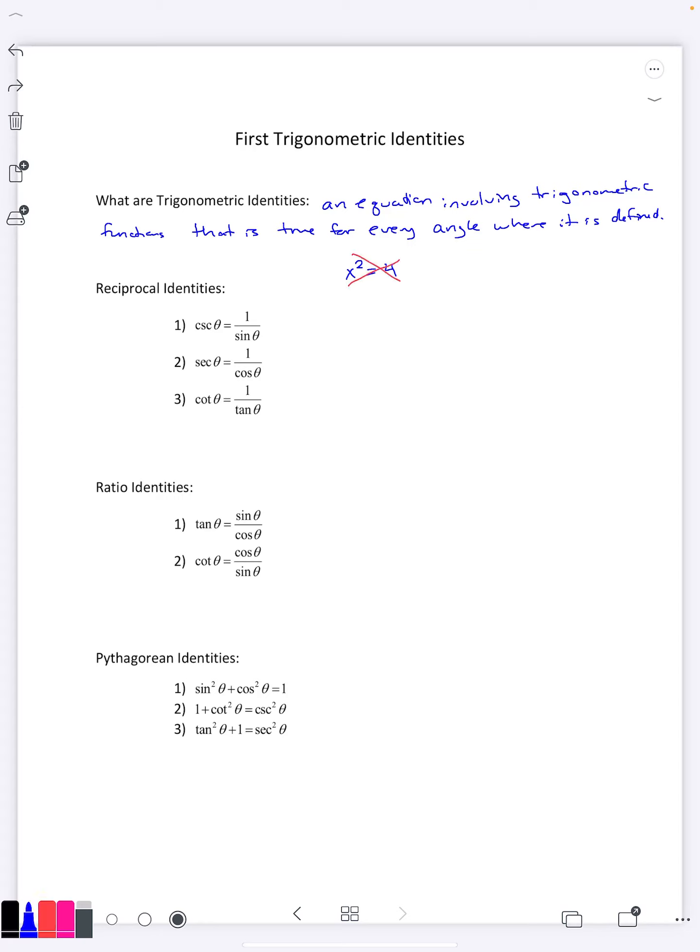On the other hand, if you had the equation x squared is x times x, that would be an identity. Those always are equal to each other no matter what the value of x is. So that's the concept we're talking about in trigonometry now, as trig identities are equations that are true no matter what angle you have, as long as at least you're talking about defined values.